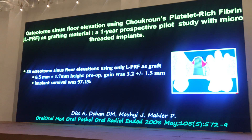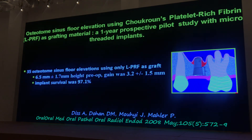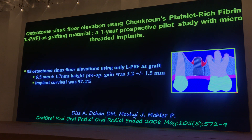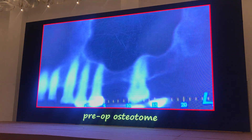They did 35 osteotomes. They gained on average 3.2 millimeters without any graft material, just by putting the clot inside.